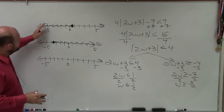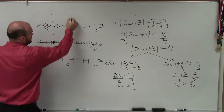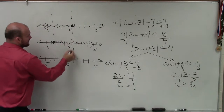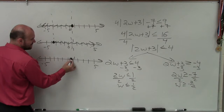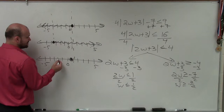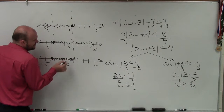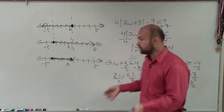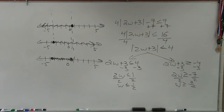So therefore, you can see that these two only intersect between these values. When I'm graphing the compound 'and' inequality, I go to 1/2 and fill that in, then go to negative 7/2 and fill that in, and I'm only going to shade in between them — because that is the only portion of the graph where both are true. So there you go, ladies and gentlemen. That is how you solve and graph your compound inequality.